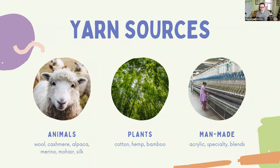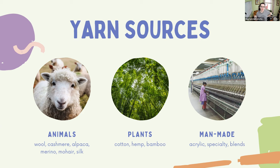Bamboo yarn is actually softer than silk when processed, and it has natural antibacterial properties. Acrylic yarn is a man-made synthetic fiber - it's the cheapest of all these and really good for beginners because it's cheap and holds up well in the wash, but it will melt if you iron it, so don't do that. There are also specialty yarns that add a little pizzazz, and blends - often acrylic blended with wool or cotton - to make yarn hold up better in the wash and just work better overall.